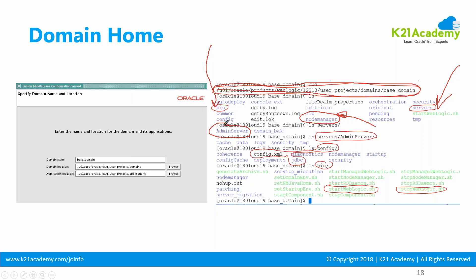If I go under the servers folder I will see Admin Server. Currently there is only Admin Server started. These server folders get created when you start the servers for the first time. I've only started Admin Server in this domain, so you see only the admin folder. Within the admin folder, within the server folder, I have cache, data, log, and security - we'll cover that later in the respective sections.